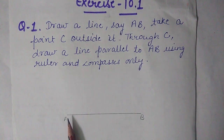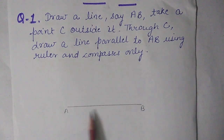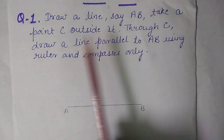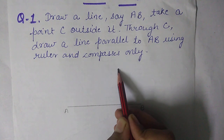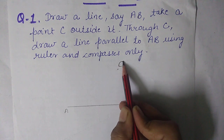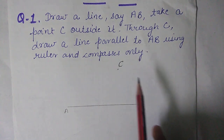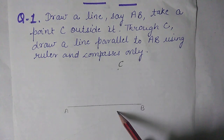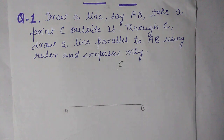First we have to draw the line AB, which may be of any length. After that we have to take a point C outside it — anywhere you can take point C. Now I have to draw a line through C, meaning that line must pass through C and be parallel to AB.